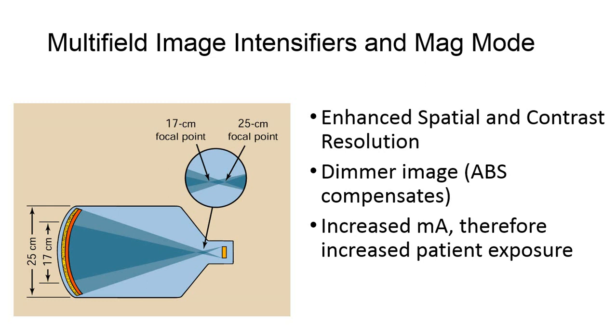This also causes the image to be much dimmer. When there is less input light, the minification gain is reduced. We'll talk about automatic brightness control soon, which should compensate for this loss of brightness, which causes a lower signal-to-noise ratio. Unfortunately, mag mode requires increased mA, so skin dose does increase for the patient. The radiologist must consider all of these factors when opting to operate the fluoroscope in magnification mode.